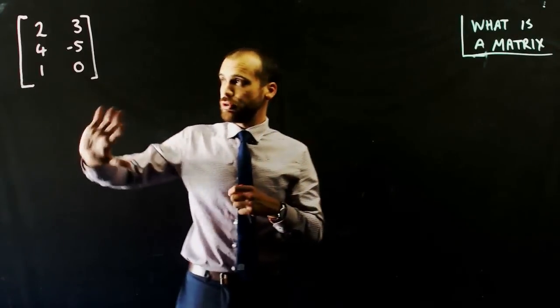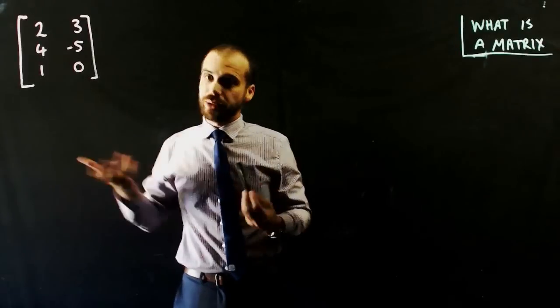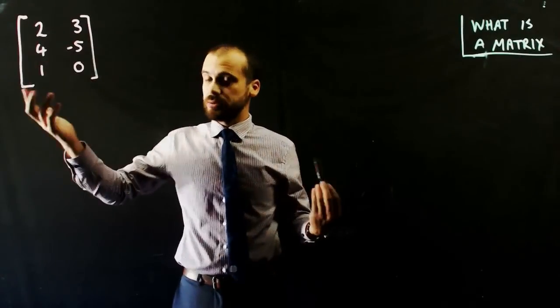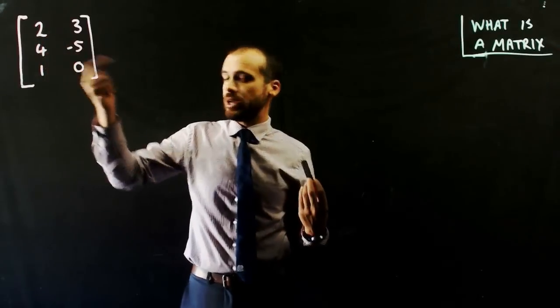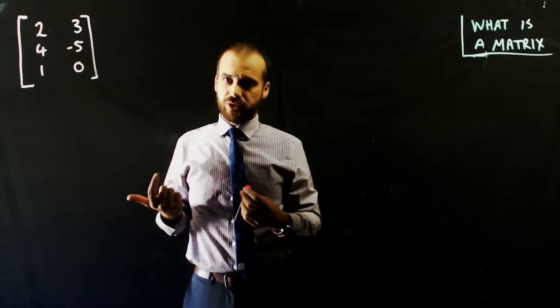So a matrix is an array of numbers, or a table of numbers would be another way to look at it. You can put decimal numbers, whole numbers, negative numbers, you can put the number 0 inside of your matrix.